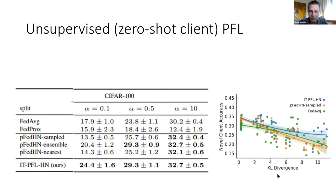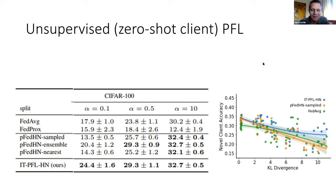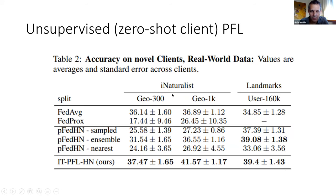Empirically: the farther the novel client is from training clients, the more accuracy drops — but it's still better than baselines. We compared with a non-personalized federated learning model which can also be applied to new clients, but it works worse when the new client's distribution is different. With more realistic data, the advantage is more pronounced.